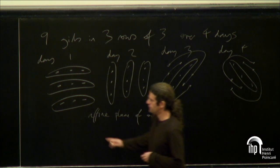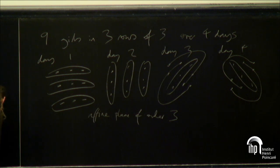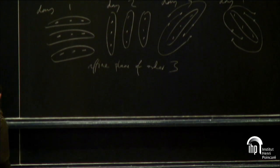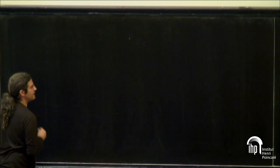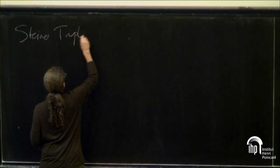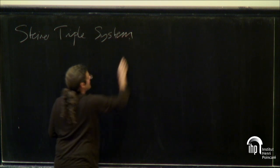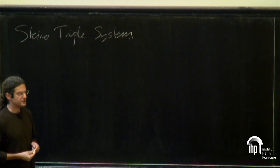A more basic version of this question is just to decompose a set of points into triples so that every pair is covered once, without thinking about the extra condition that they're decomposed into parallel classes or perfect matchings in the terminology of hypergraphs. This object is called a Steiner triple system — it's named after Steiner for some reason, although Kirkman was actually the one who discovered and solved the problem.